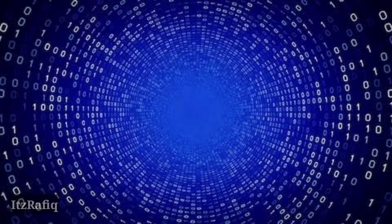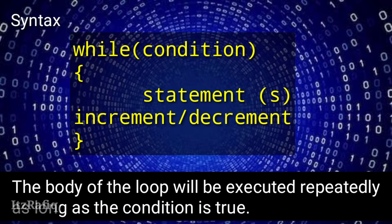First, the while loop. The general format of while loop is as you can see on the screen: first 'while', inside the bracket you will write the condition, then curly braces. Within the curly braces you will write the body of the loop. The code that will execute repeatedly inside a loop is known as the body of the loop.